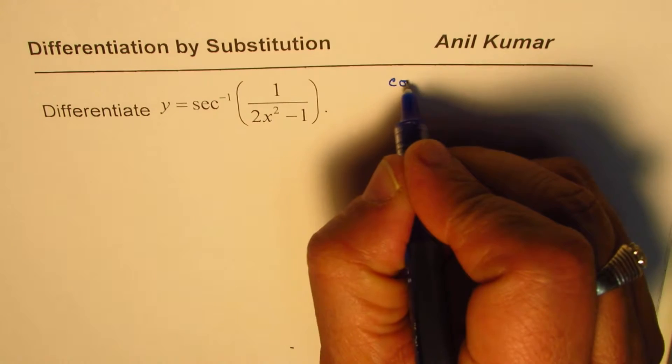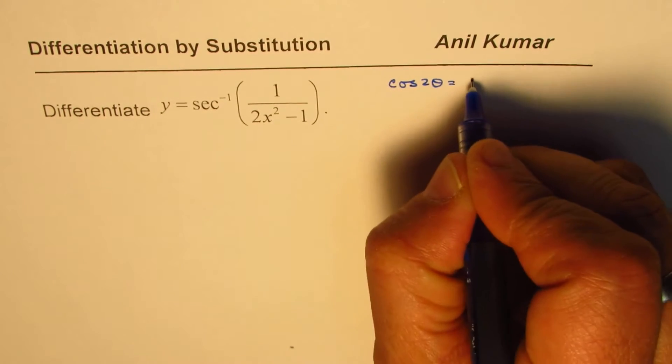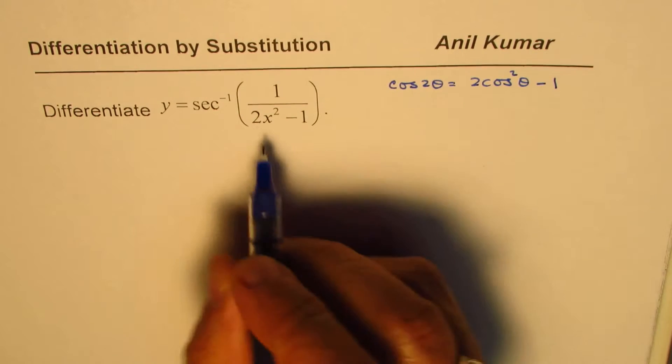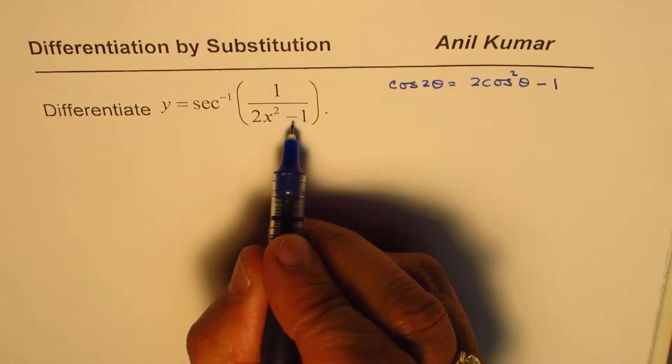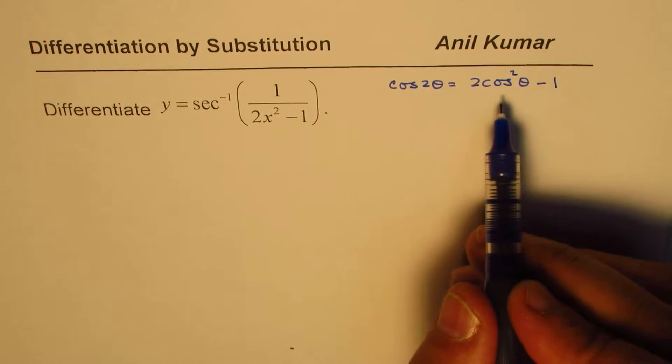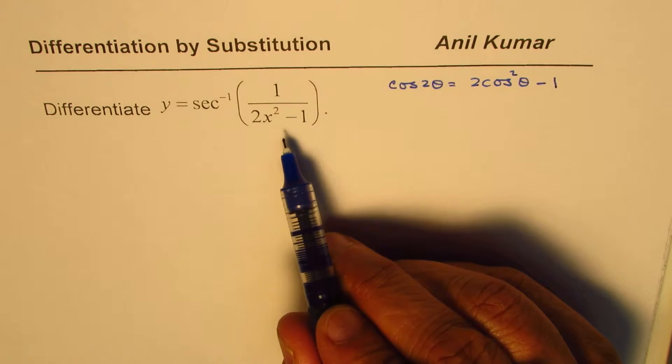We know cos 2 theta could be written as 2 cos square theta minus 1. So, this 2 cos square theta minus 1 does remind us of the same thing. So, this is what can help us simplify this.